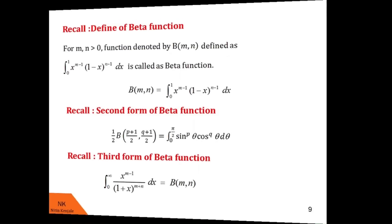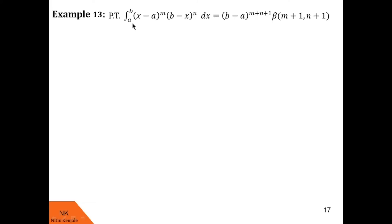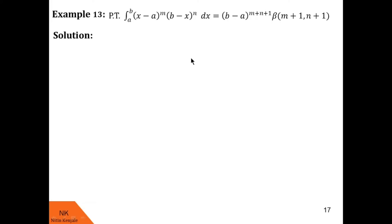Let us go ahead with examples. Here we are asked to prove that the value of the integral of x minus a raised to m into b minus x raised to n dx over the limit a to b is b minus a raised to m plus n plus 1 into beta of m+1 comma n+1. You can consider this statement as a formula to evaluate many such integrals with various values of a and b. Let us see the proof of this statement.